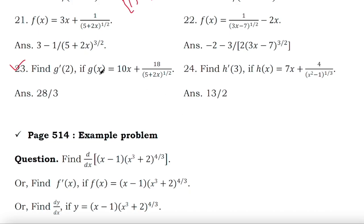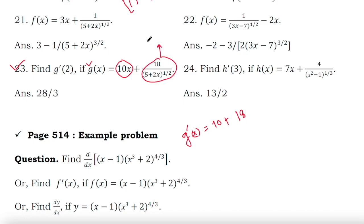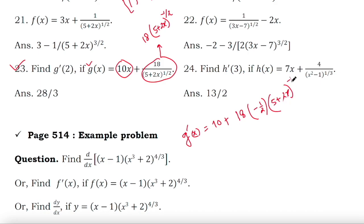Let me solve example 23. z(x) is given, so z'(x) will be the derivative of 10x, which is 10, plus the derivative of the second term. Simplify the second term: 18(5 + 2x)^(−1/2). Now differentiate: 18 × (−1/2)(5 + 2x)^(−3/2) × derivative of (5 + 2x), which is 2.